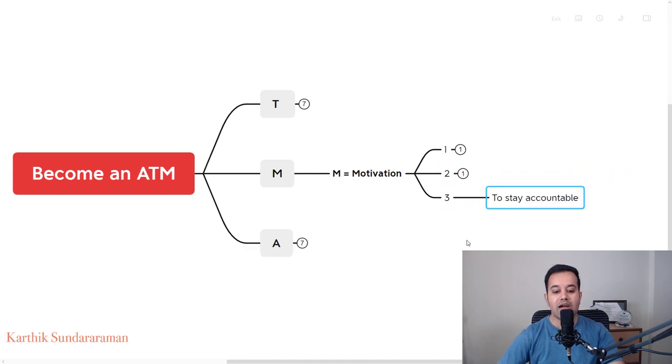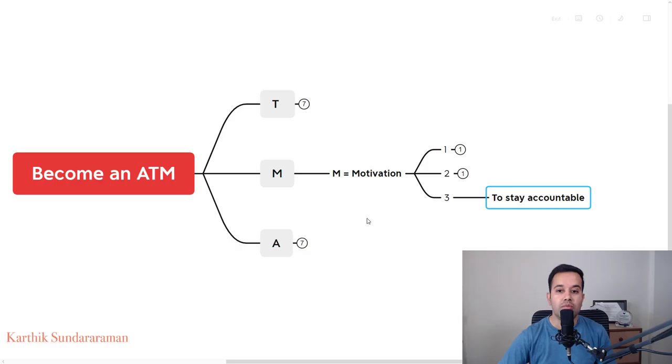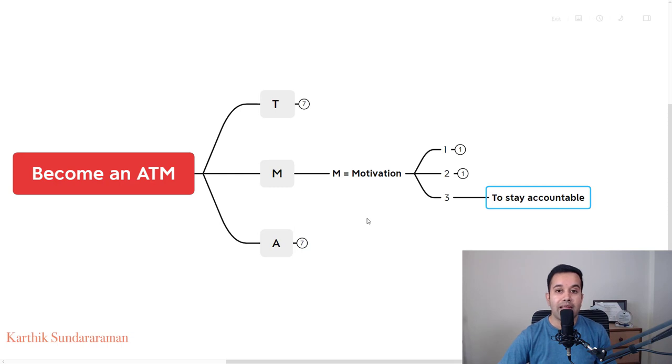The third one being to stay accountable towards the actions that you're going to be taking. You can create this accountability system either individually or pairing up with someone or being part of a community of action takers. How would you want to keep yourself motivated? So that's the M in the ATM.